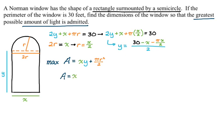That's not looking very clean, but that's okay, because I'm just going to substitute and see what happens anyway. So area as a function of just x, I'm replacing y with this thing I just found. So x times (30 - x - πx/2)/2, plus π/2 times (x/2)². Okay, so far so good.